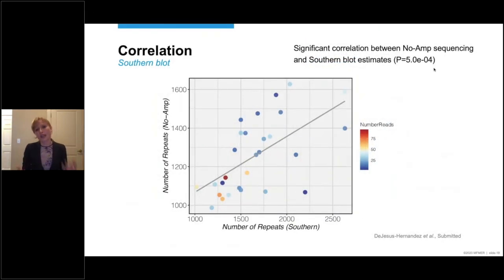This is a correlation plot where all 28 individuals are displayed. On the y-axis, you can see the number of repeats based on no-amp sequencing. And on the x-axis, the number of repeats based on southern blotting. Every individual is represented by a dot or a circle. And you can see that there is a positive correlation. As the number of repeats increases based on no-amp sequencing, it also increases based on southern blotting, which is great. And you may have noticed that different colors are used. And the color of each circle denotes the number of reads.